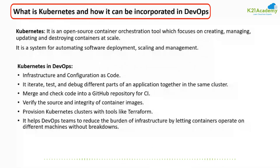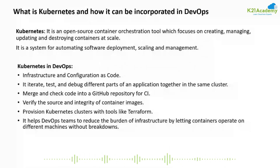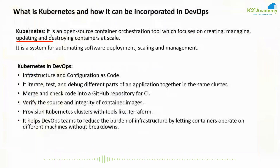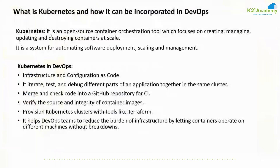Similarly, what is Kubernetes and how it can go hand in hand with DevOps? In layman terms, Kubernetes is simply an orchestration tool. It is an open source container orchestration tool which focuses on creating, managing, and updating your containers at scale. At scale means it has the flexibility to scale horizontally and vertically. You can scale your resources, scale your clusters, increase or decrease your resources. It has the flexibility to auto-scale your pods, deployments, and other Kubernetes objects.